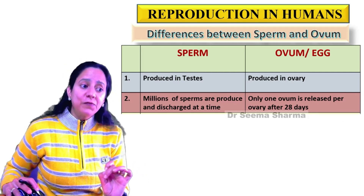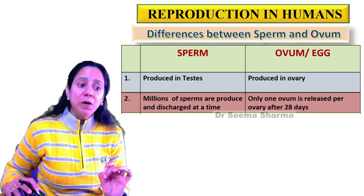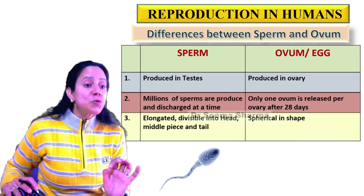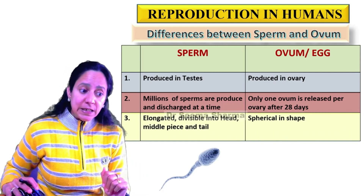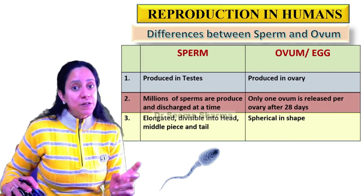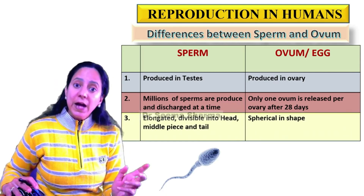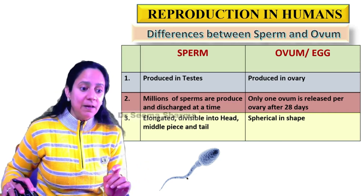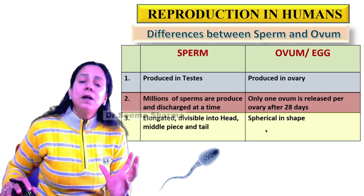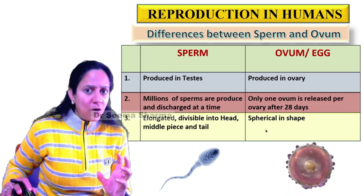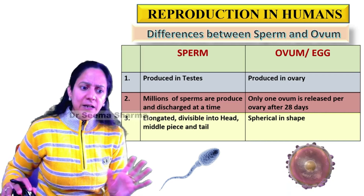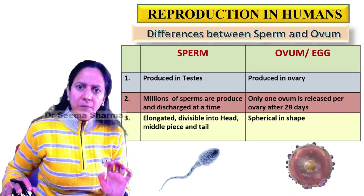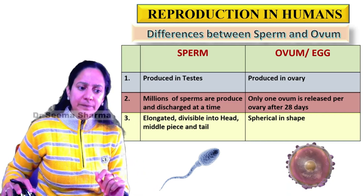The next point of difference between sperm and ovum is shape. The sperm is elongated and is divisible into head, middle piece, and tail, whereas ovum or egg is spherical and is not divisible into further subparts.